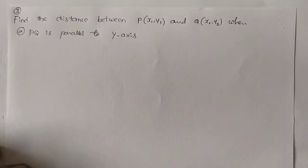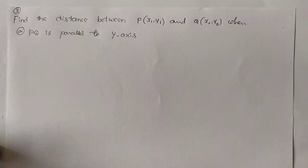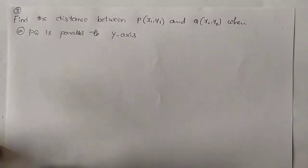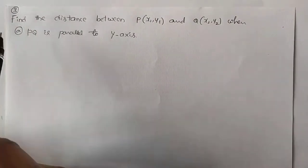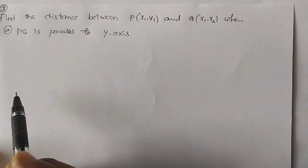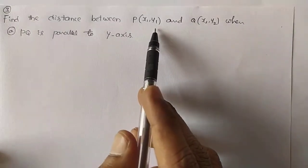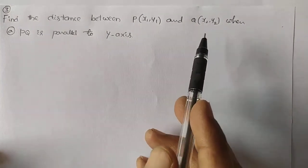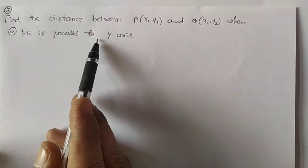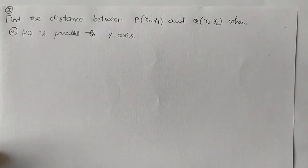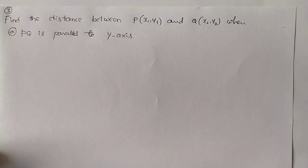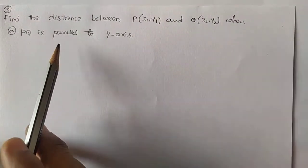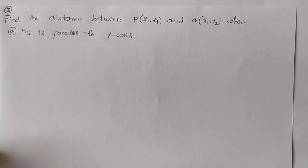These questions belong to Exercise 10.1 in your NCERT textbook. In Exercise 10.1, we will have the third question: find the distance between P of x1, y1 and x2, y2 when PQ is parallel to y-axis. In this, we will have two sub-questions. First, PQ is parallel to y-axis; second, PQ is parallel to x-axis. Let us solve one by one.